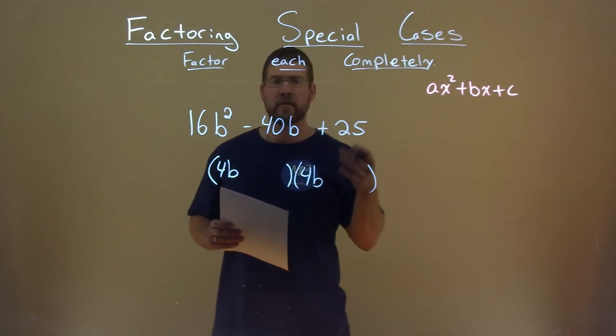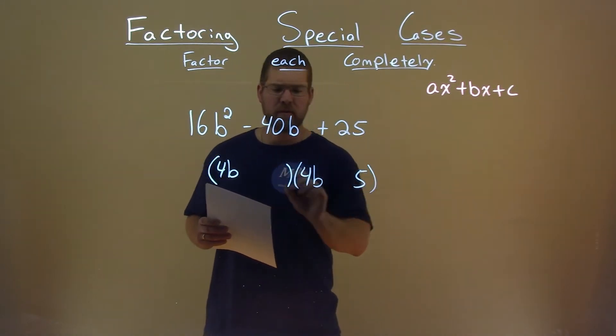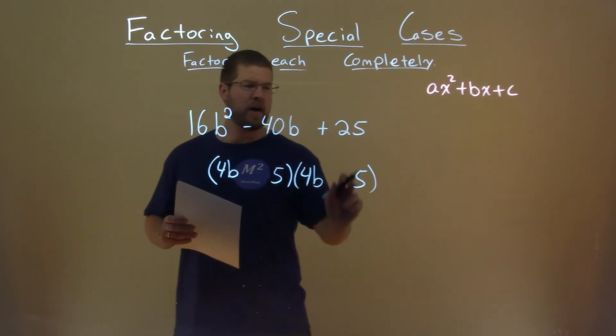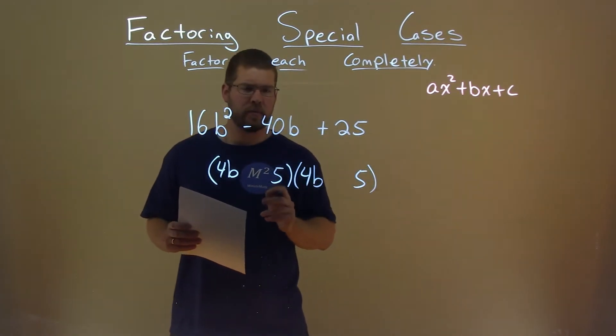25. Well, the square root of 25 is 5, so we have a 5 here and a 5 here. All right, so 5 times 5 gives me that 25, but be careful.